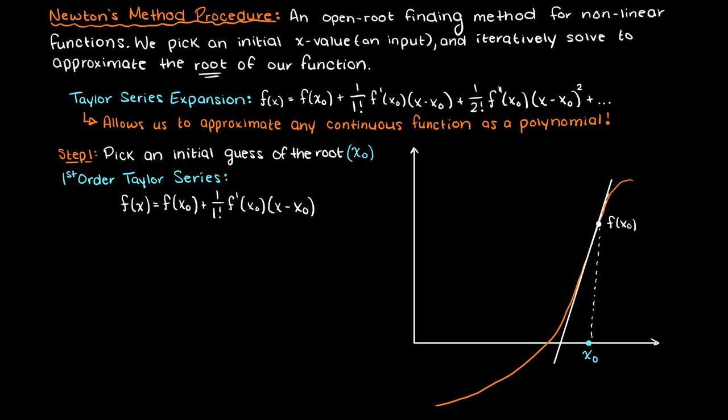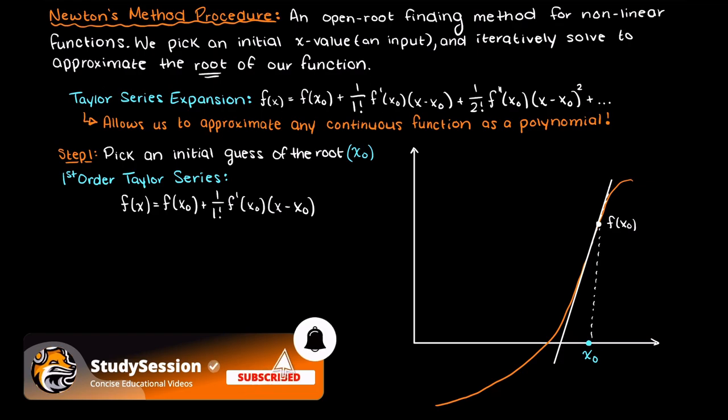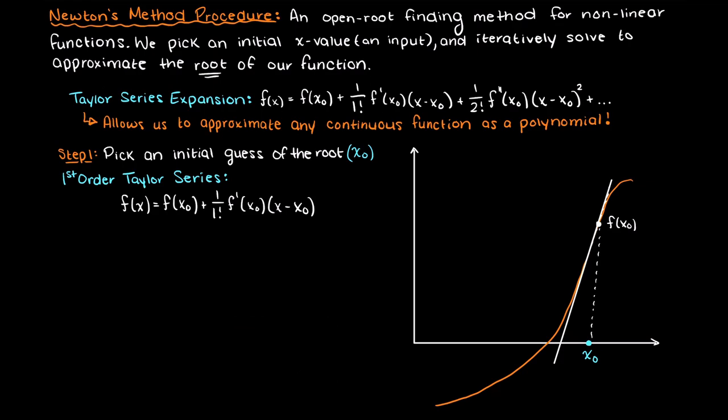So it is basically saying if we begin at this point here, that being our original guess, then we can find the derivative which tells us the instantaneous rate of change of our function for this input. Then this final term here is just telling us the size of step that we take along our derivative.